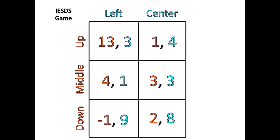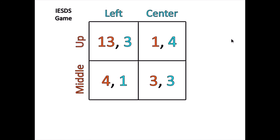Which means instead of looking at the full game, we should really be looking at this smaller game. Based on the fact that player 2 is super intelligent and wouldn't play right, and player 1 knows this and therefore wouldn't play down, player 2 can now infer that player 1 would never play down. That means she can look at her strategies between left and center and decide that she would never want to play left.